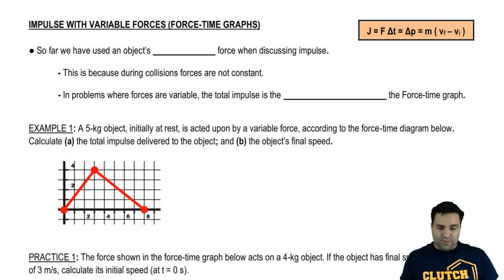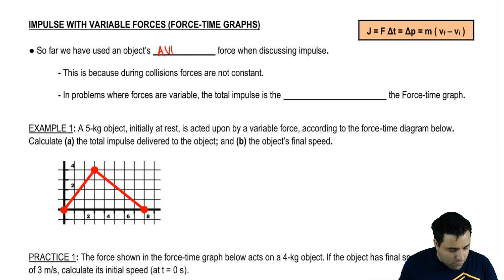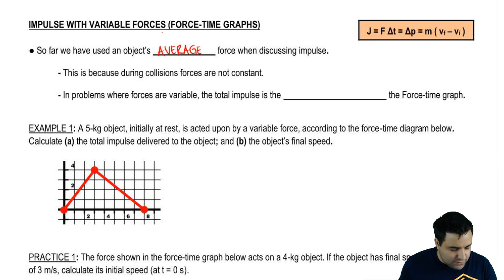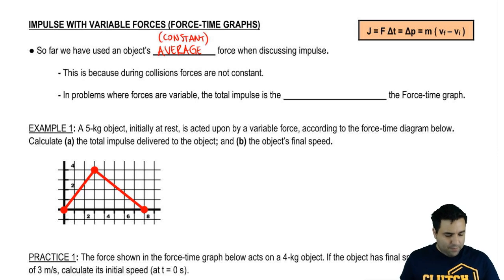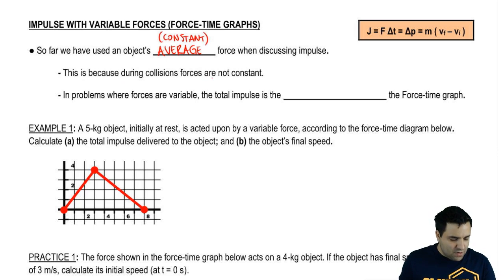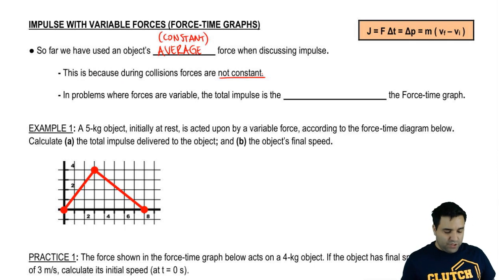So far everything we've done, you might have noticed, talked about an object's average force. And you may remember that an average force is also a constant force. That's because constant forces are much simpler than variable forces. But the problem is when you have collisions, forces are not constant — they're variable, they're changing.